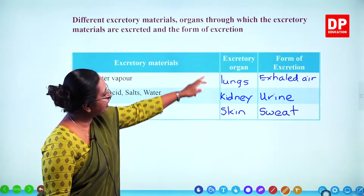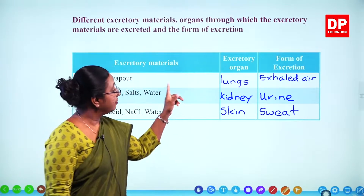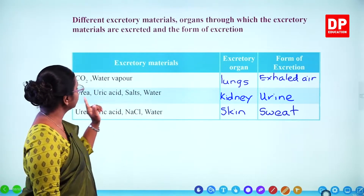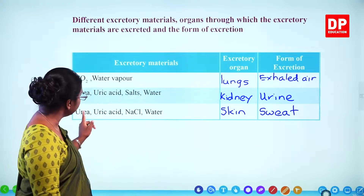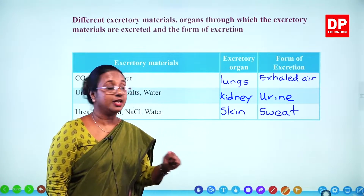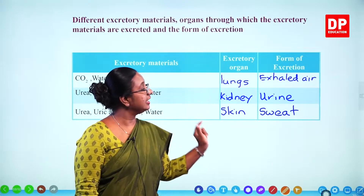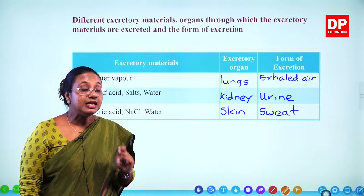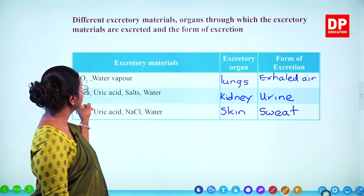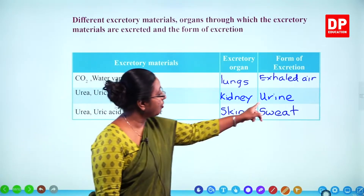So there are three excretory organs: the lungs, kidneys, and skin. From the lungs, exhaled air contains carbon dioxide and water vapour. From the kidneys, urine contains urea, uric acid, salt, and water. Similarly, urea, uric acid, NaCl, and water are excreted through the skin as sweat. We have already discussed the function of the lungs; now we will discuss the function of the kidney and how urine is produced.